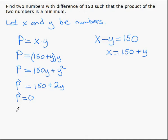So if we set that equal to zero, we get zero equals 150 plus 2y. So zero.